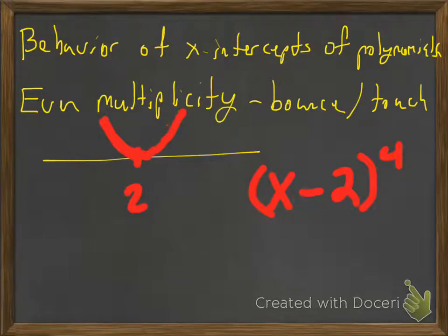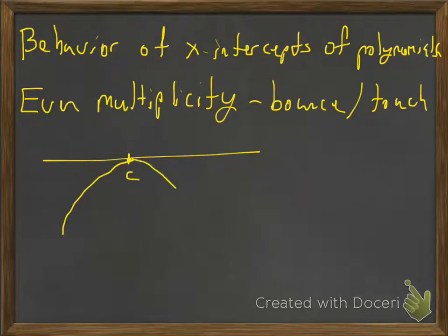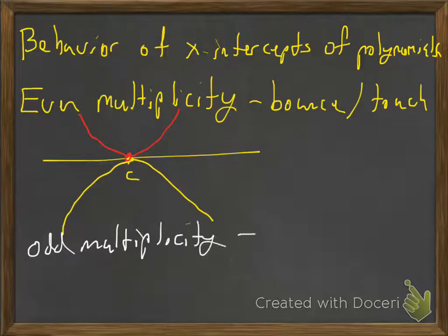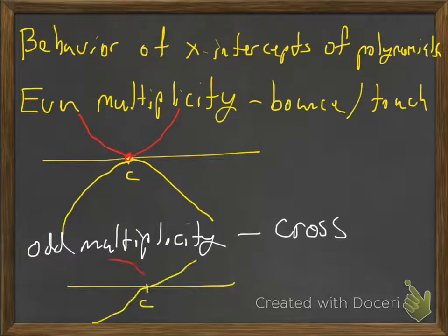And that's what happens when we have even multiplicity, is it's just going to touch, or you can say bounce at that particular root. So you can either touch below or touch above. If you have odd multiplicity, then you're going to cross.